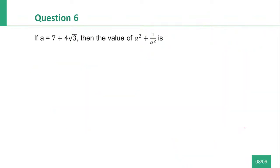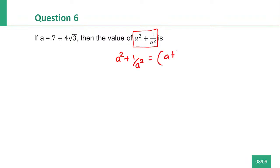Final question of the day. A is equal to 7 plus 4 root 3. Find A square plus 1 by A square. If you have A square plus 1 by A square, it equals A plus 1 by A, the whole square, minus 2.